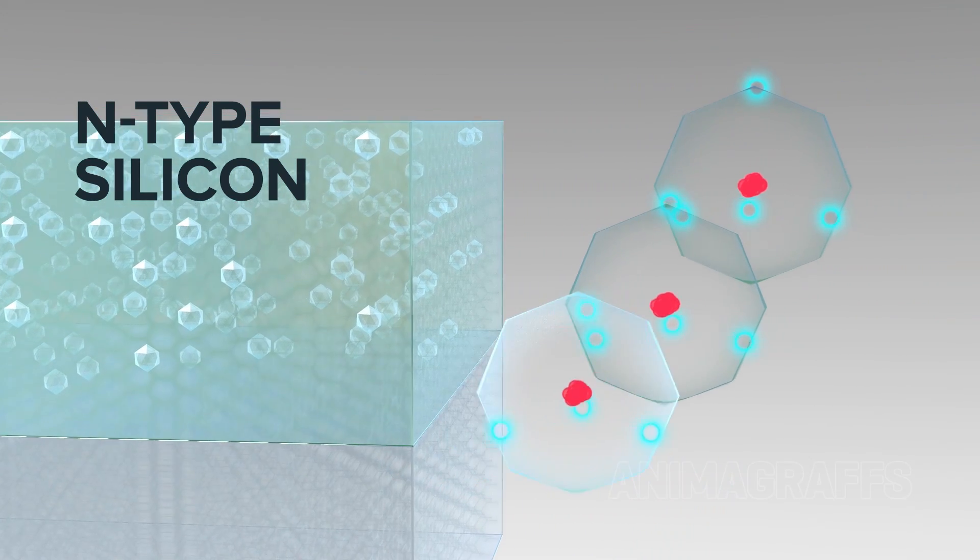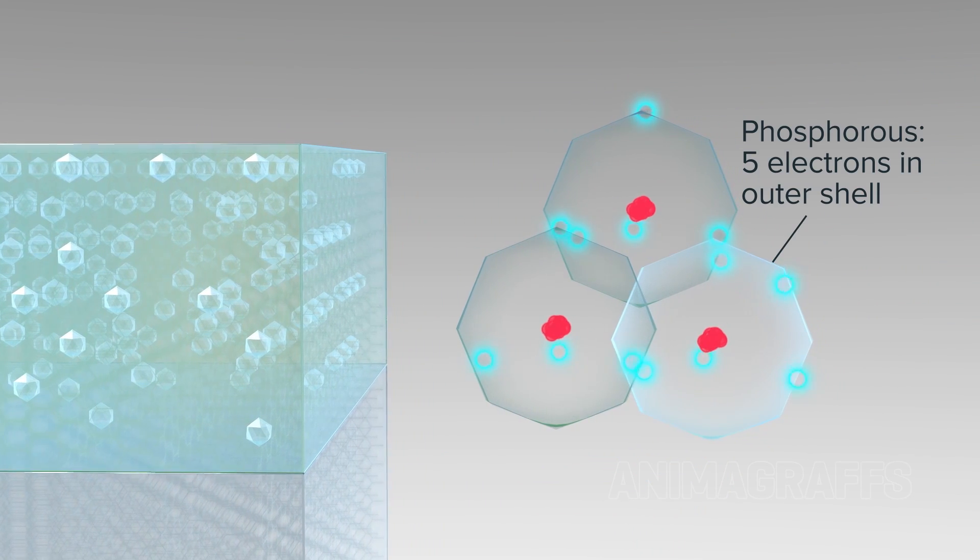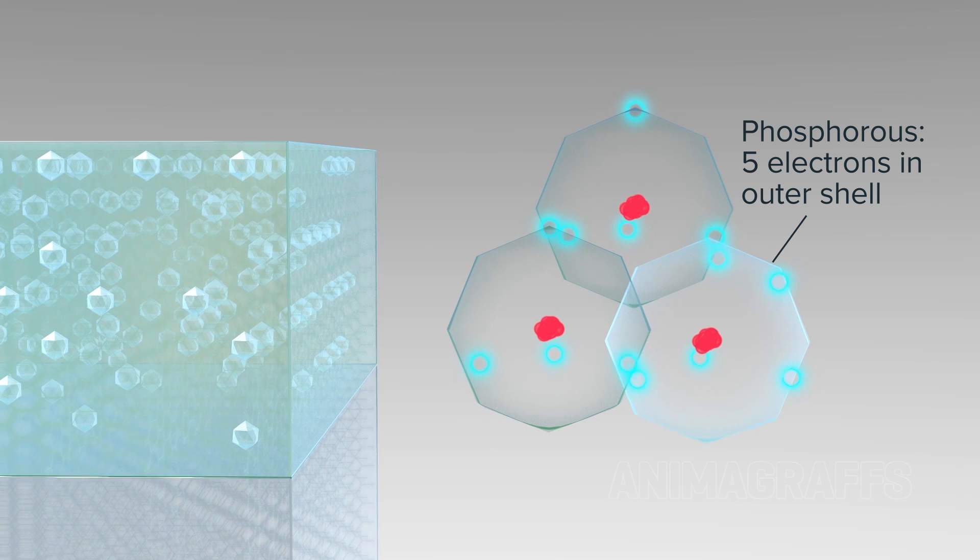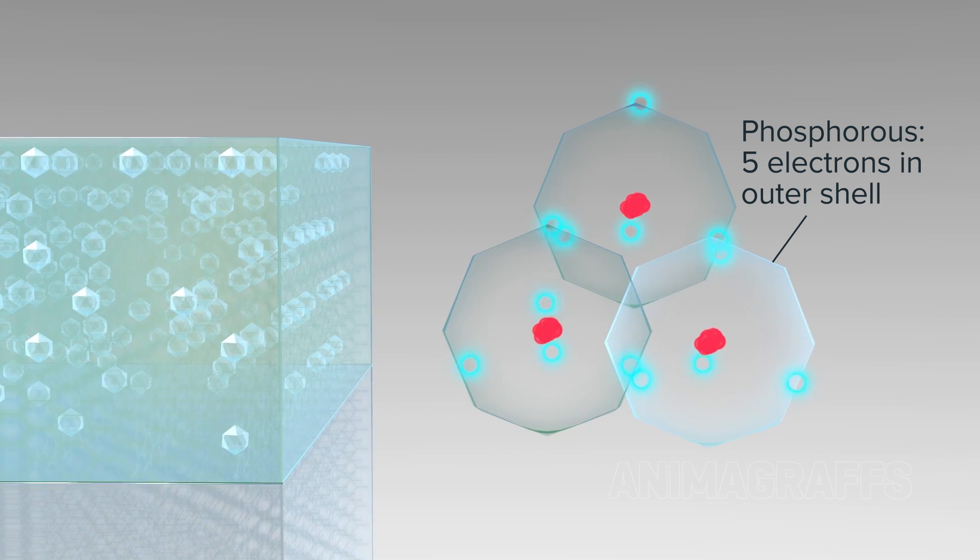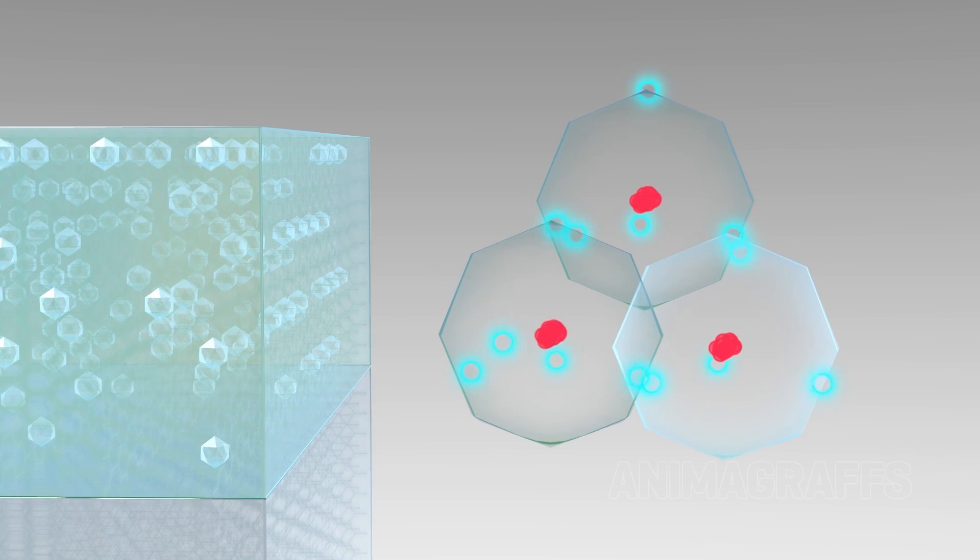N-type silicon, N meaning negative, is doped with phosphorus. Phosphorus has five electrons in its outer shell, where four are used to bond with neighboring silicon atoms, leaving an extra free electron.